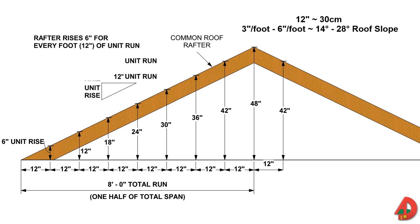The unit run, indicated along the base of the slope diagram, is always 12 inches. The unit rise is the number of inches that the rafter rises vertically for every foot of unit run. Depending on the house and roof design, a moderate roof pitch of 3 to 6 inches per foot is optimal to reduce wind loads. Gable roofs are more susceptible to wind loads than hip roofs. Roof overhangs wider than 2 feet produce higher uplift forces than narrower overhangs.